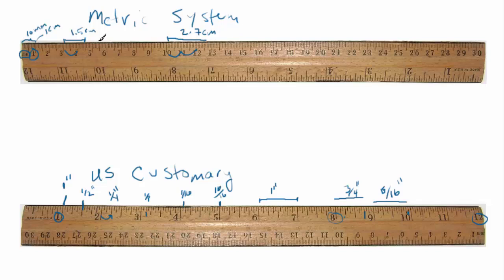So really, very simple system. This one is a little bit more complicated because you have to remember what all these little dashes mean. This one, you just have to know what are the main centimeters, and then what are the little digits, or the decimal, or the millimeters. And that's basically how you use your ruler.